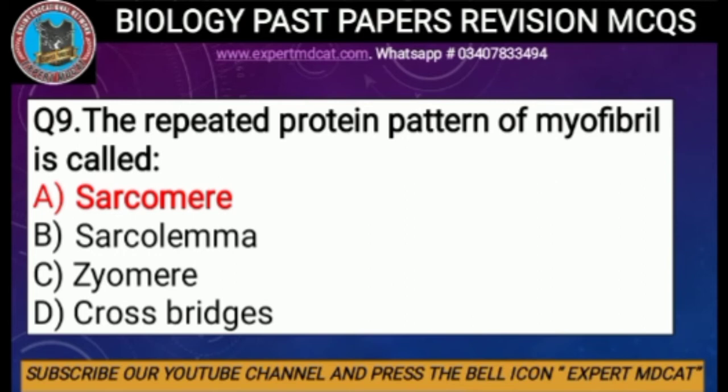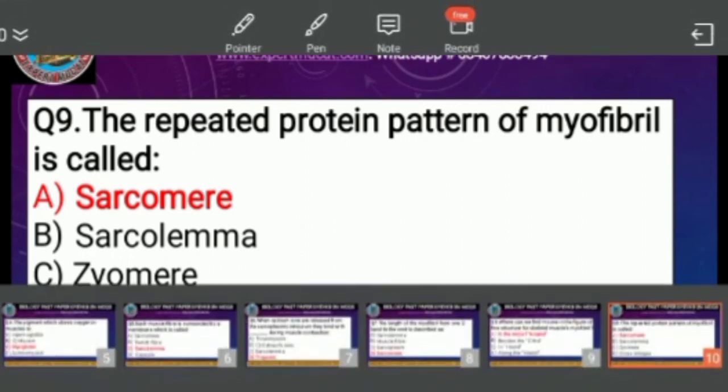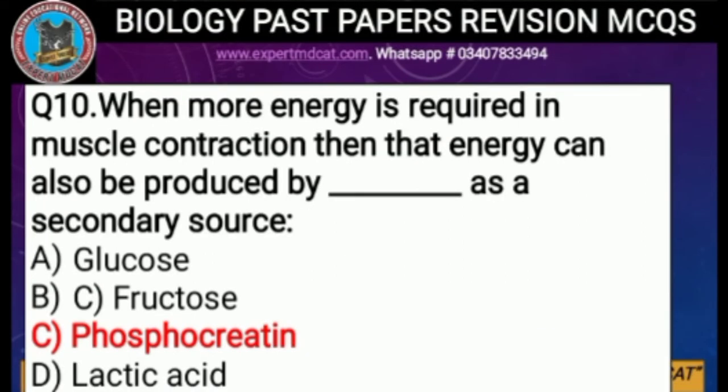Question number nine: the repeated protein pattern of a myofibril is called — it is called sarcomere. Myofibrils are composed of actin, myosin, and other proteins organized into thick and thin filaments called myofilaments. These myofilaments repeat along the length of the myofibril in sections called sarcomeres. The correct option is A, sarcomere.